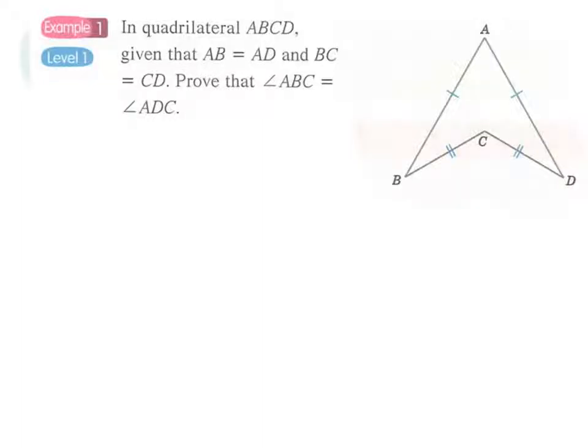Let's look at example 1. In quadrilateral ABCD, given that AB equals AD and BC equals CD. That is AB equals AD and BC equals CD.